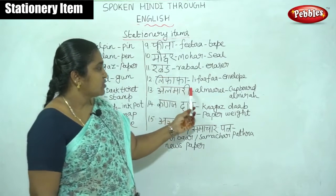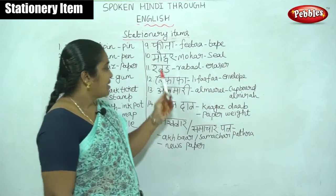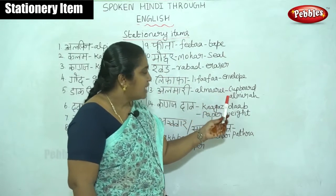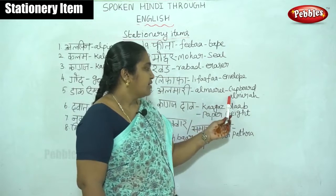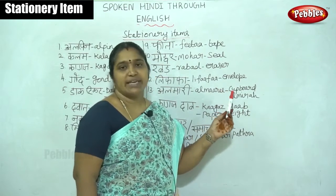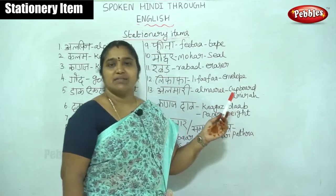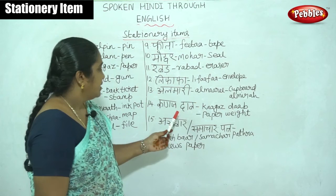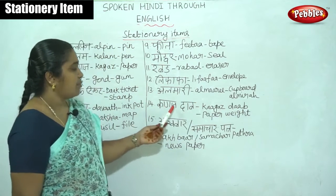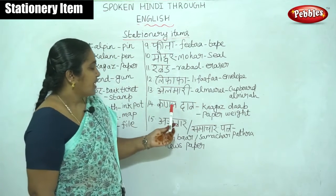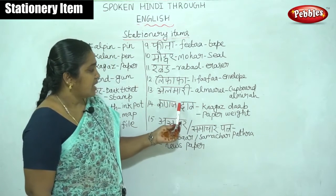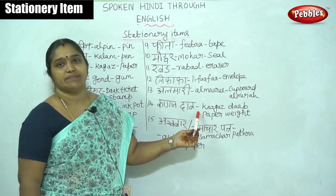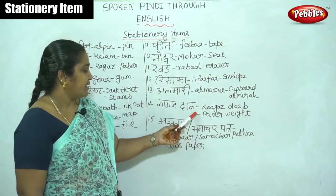Then almari. Almari is also coming under these stationary things — it is a cupboard, almira. We can keep books safely. Then kahas dab. Kahas dab is called paper weight.